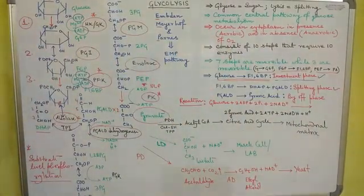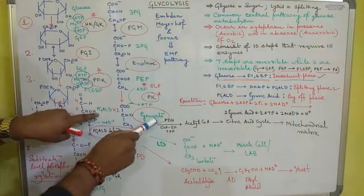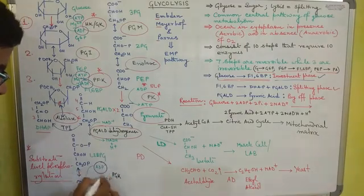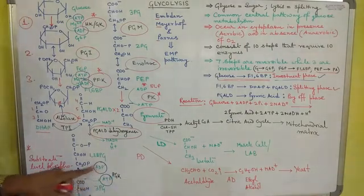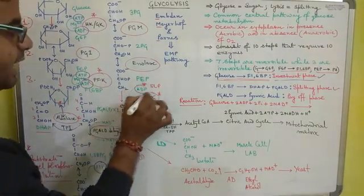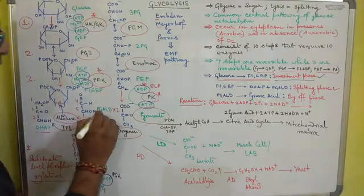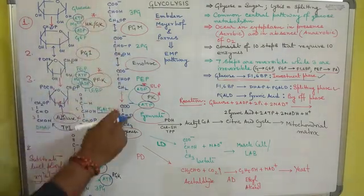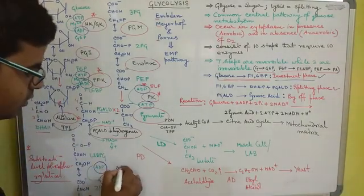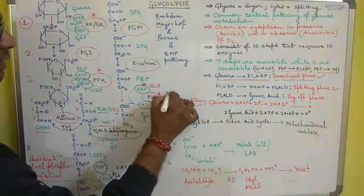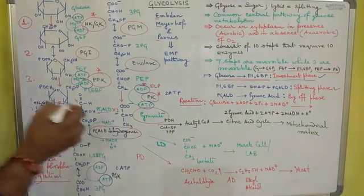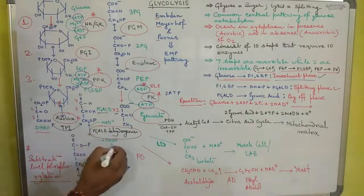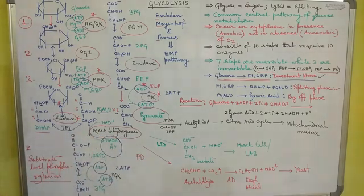The third part, from glyceraldehyde 3-phosphate to pyruvic acid, is called the payoff phase because ATP is produced from ADP. Since DHAP is converted into PGALD, all subsequent components exist as 2 molecules. As a result, 2 molecules of ATP are produced at each of the two substrate-level phosphorylation steps. Also, during the conversion of PGALD to 1,3-bisphosphoglycerate by PGALD dehydrogenase, one molecule of NADH + H+ is produced per molecule.